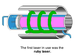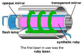Today, there are many varieties of lasers, but the ruby laser was the first. At the core of the ruby laser is a bar of synthetic ruby. At each end of the bar is a mirror, one of which is transparent enough to allow light to pass.